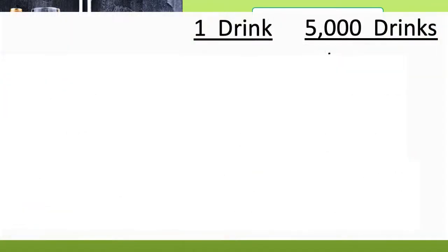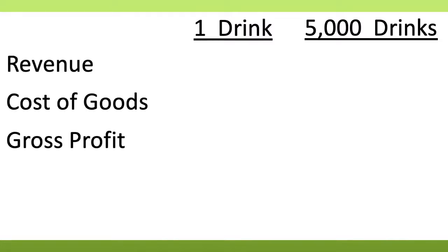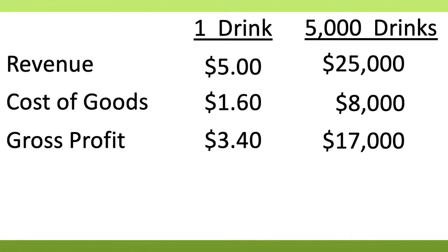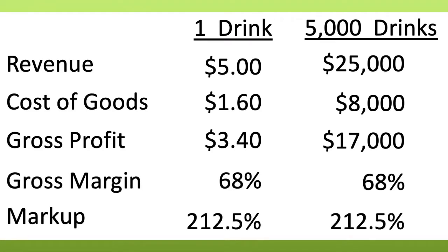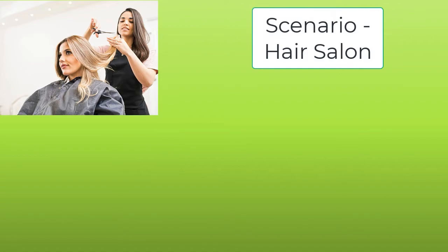Using this info, suppose the bar sold $5,000 drinks during the month and nothing else. What shows up on the income statement? You see the revenue of $25,000, costs of $8,000, and a gross profit of $17,000. From this, you can still calculate either the markup or the gross margin. The numbers come out the same as if you only sold one shot. Things become a little trickier when you have more than one cost component in the cost of goods or service that you are selling.